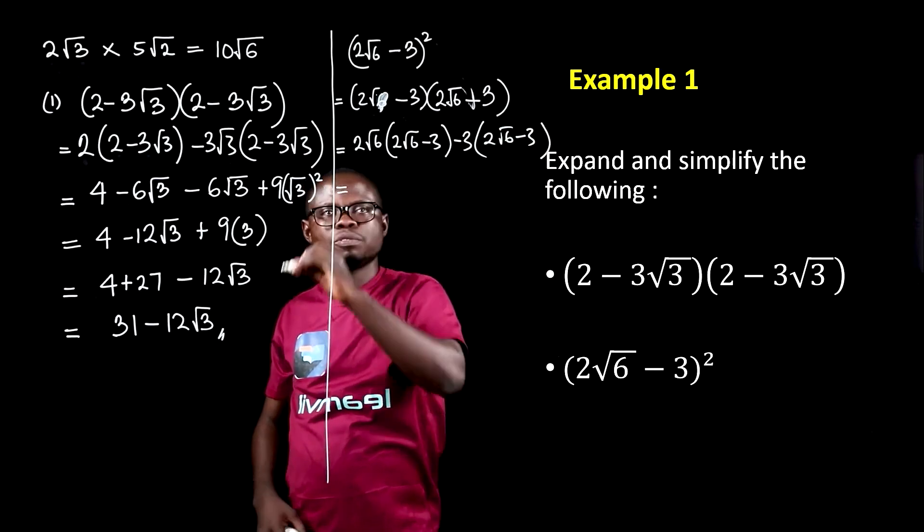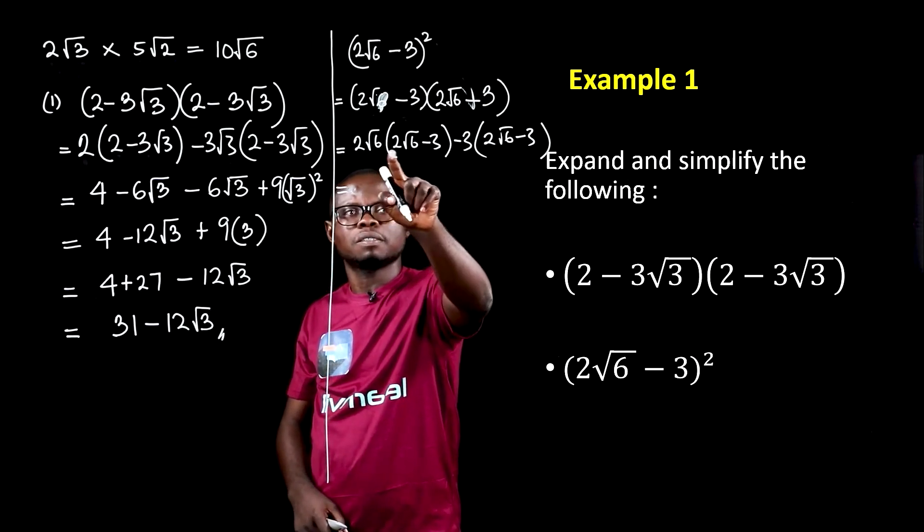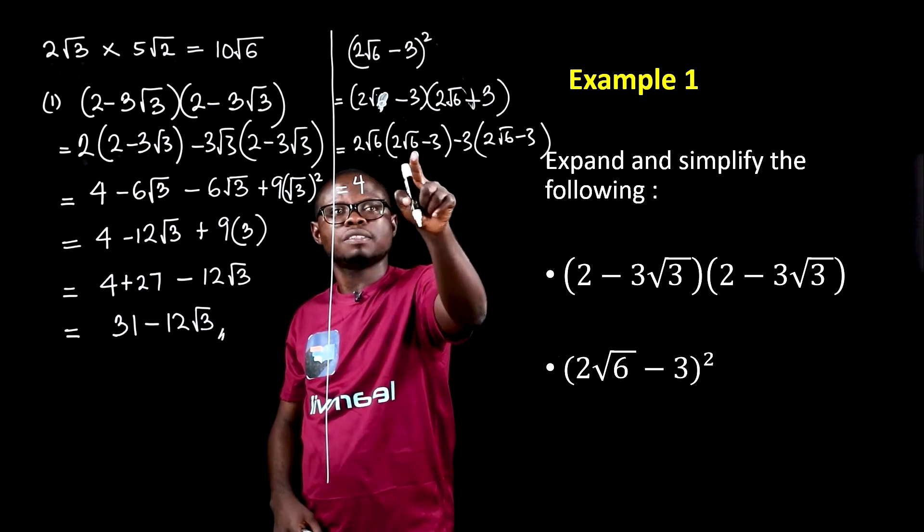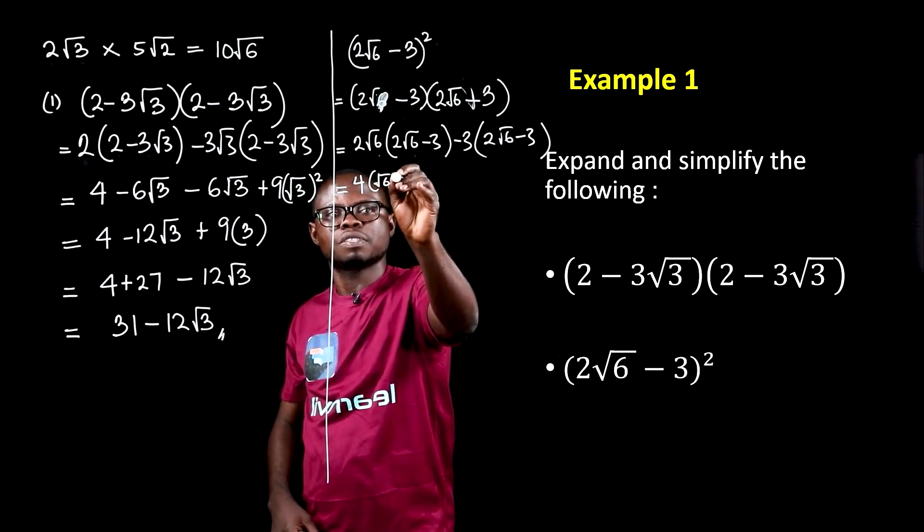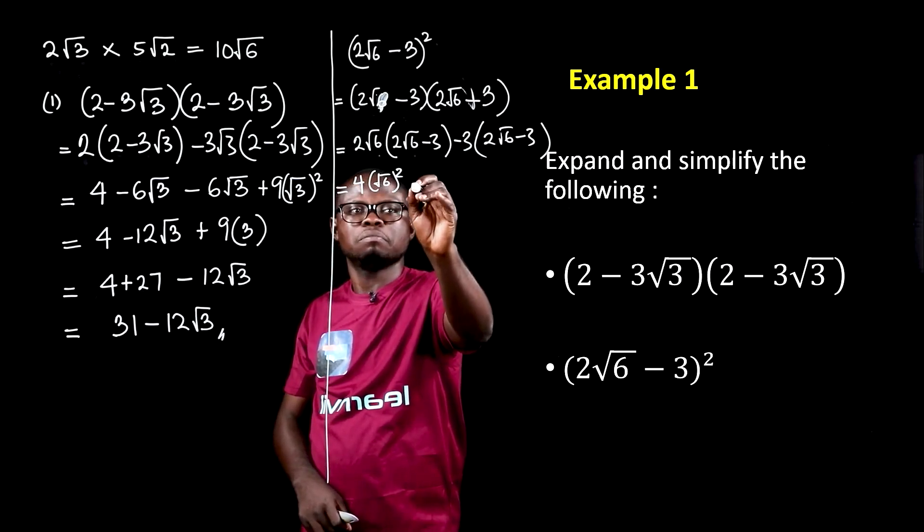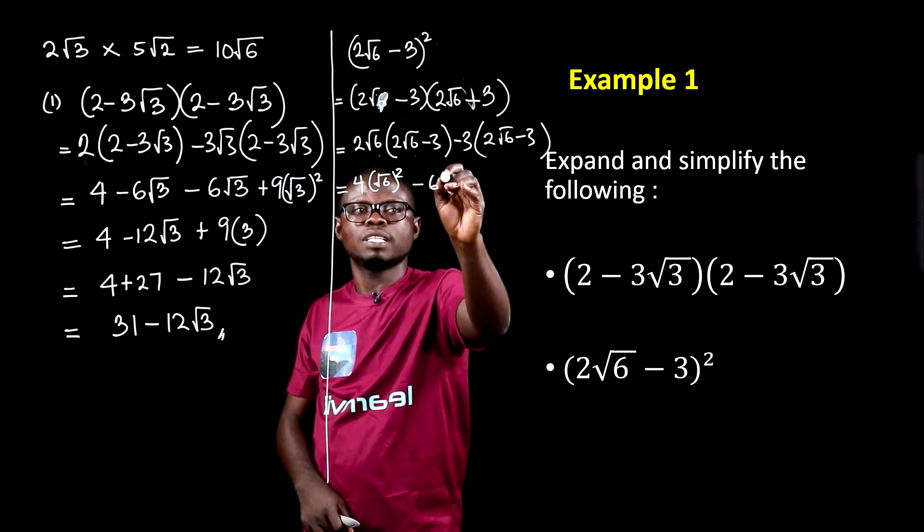This expands to, we are multiplying this by this. Outside, outside, 4. Inside, inside, root of 6 squared. Outside, outside, minus 6. There is 1 inside.